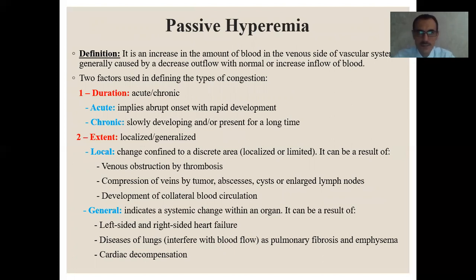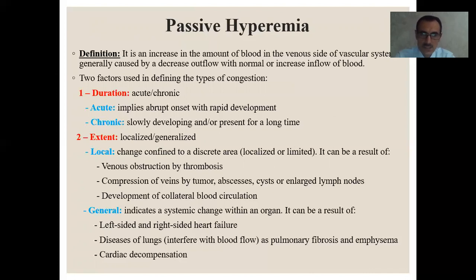Now we will discuss passive hyperemia. Passive hyperemia is an increase in the amount of blood in the venous side of the vascular system, generally caused by decreased outflow with normal or increasing inflow of blood. Two factors are used in defining types of congestion. First, duration — it may be acute or chronic. Acute passive hyperemia implies abrupt onset with rapid development, and chronic passive hyperemia is slowly developing or present for a long time. Second factor is extent — it may be localized or generalized. Local passive hyperemia is confined to a discrete area, resulting from venous obstruction by thrombosis, compression of veins by tumor, abscesses, cysts, or enlarged lymph nodes, and development of collateral blood circulation.